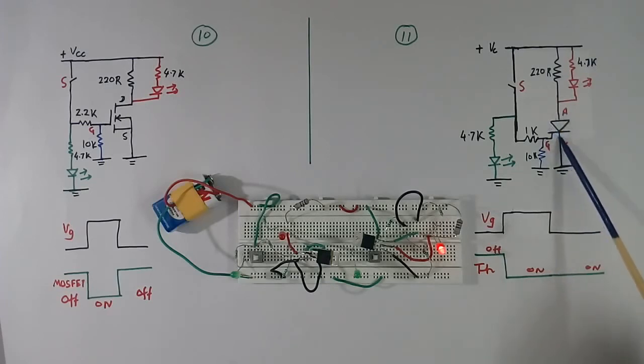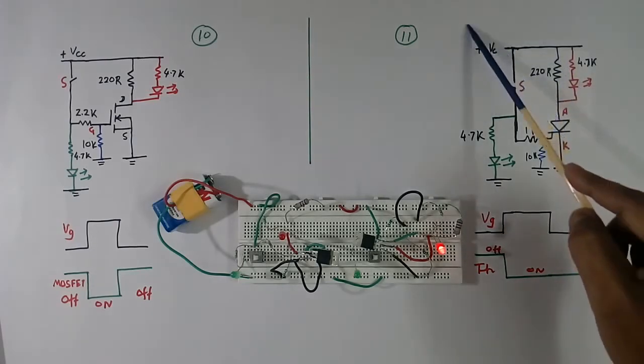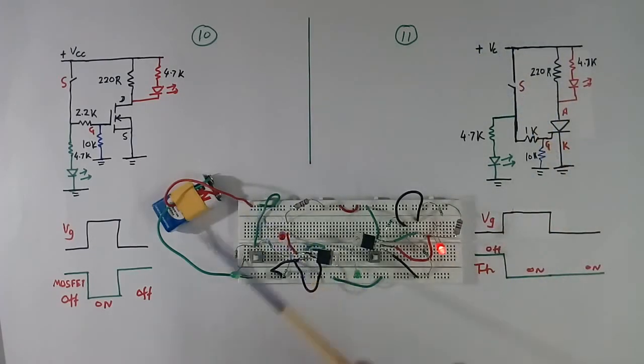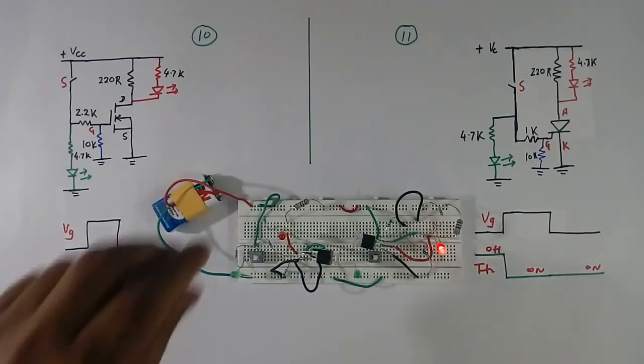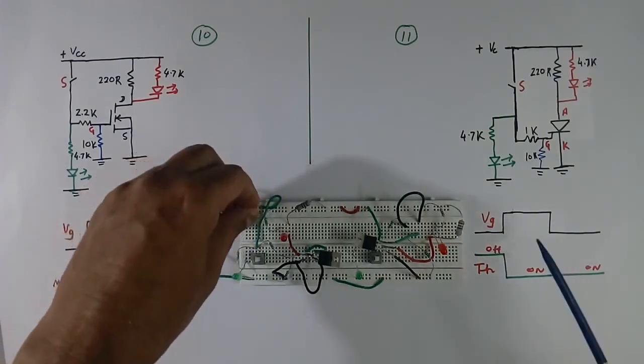To make it OFF, we have to make this current 0. This can be made 0 by opening this power supply. So I will open power supply, so the transistor will come OFF. See, it has become OFF.